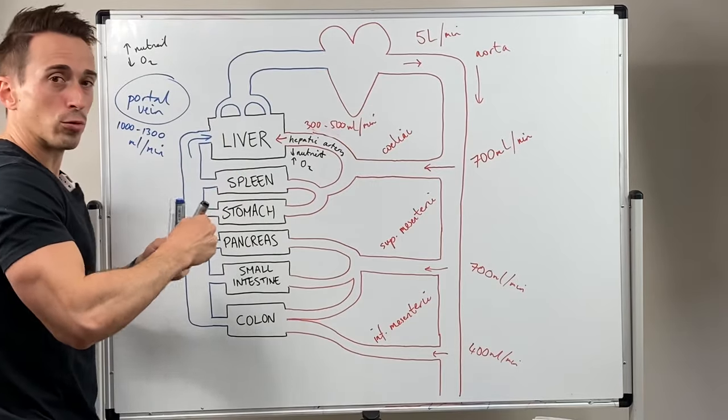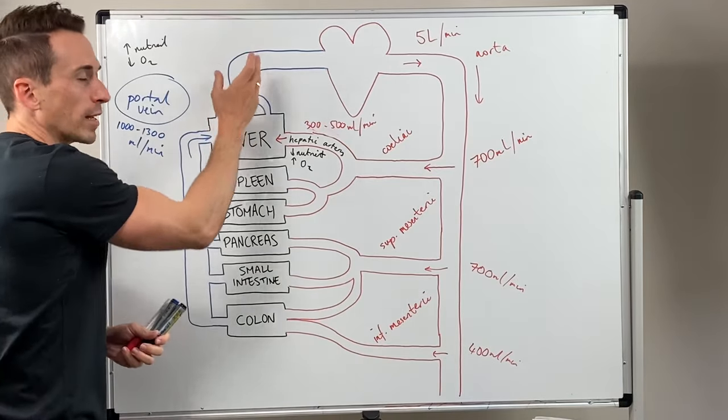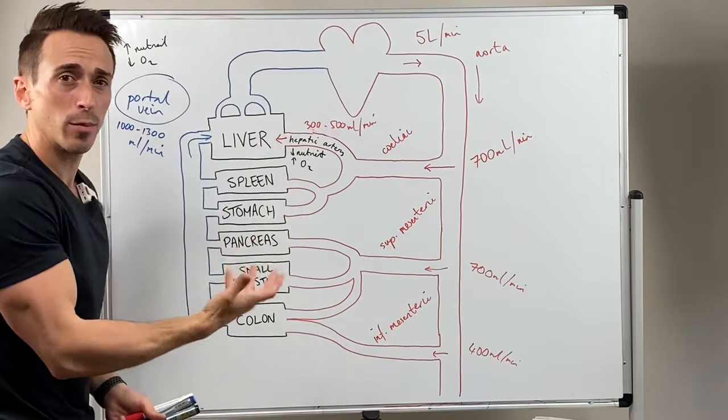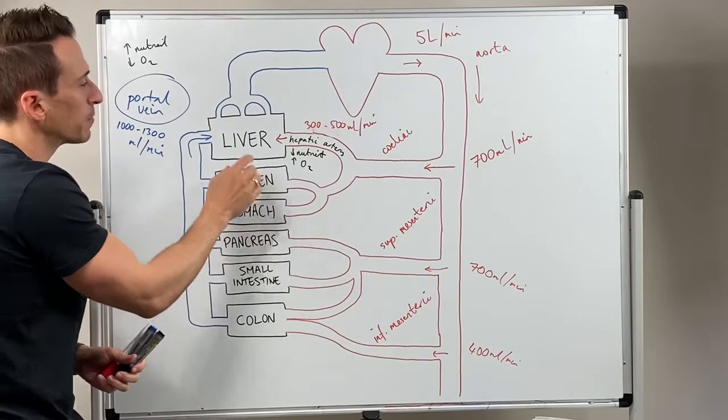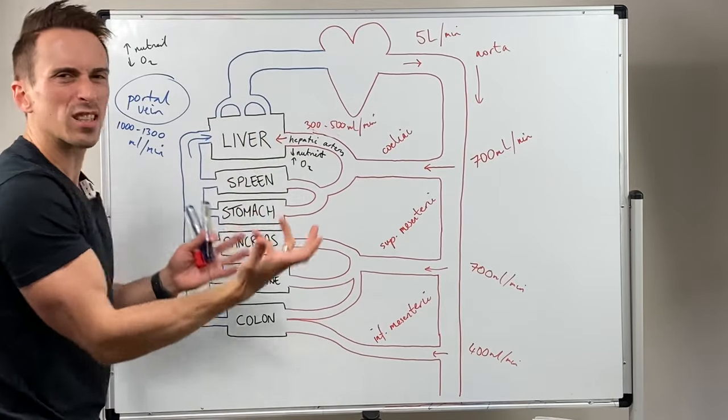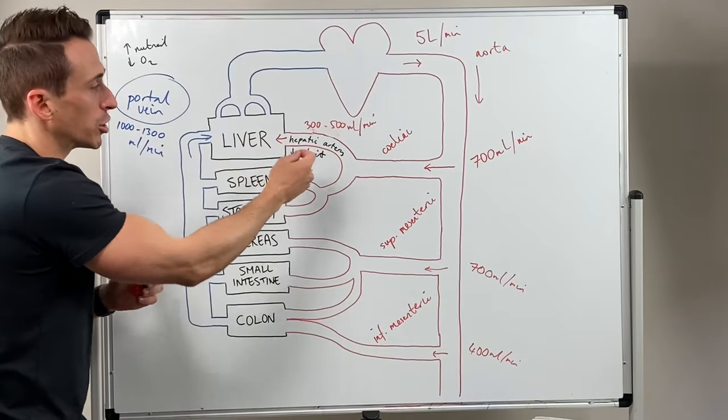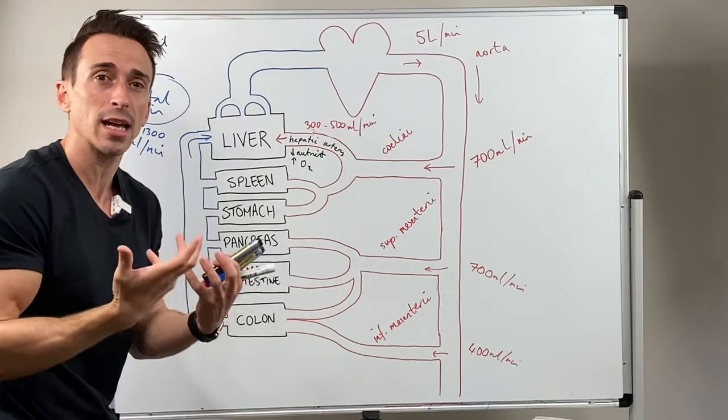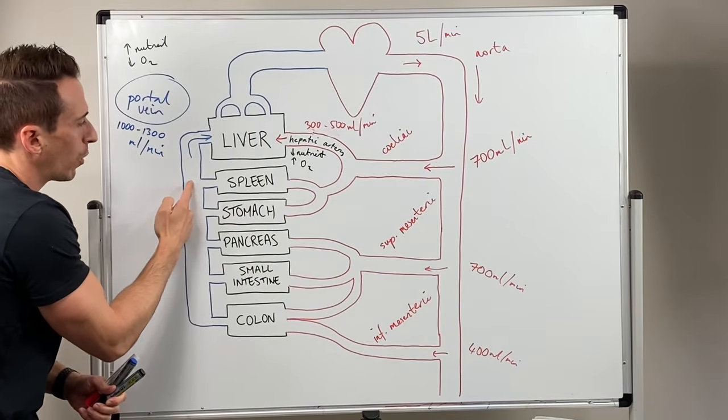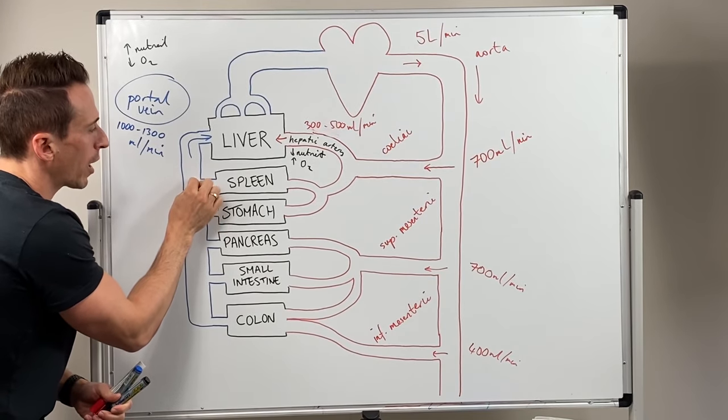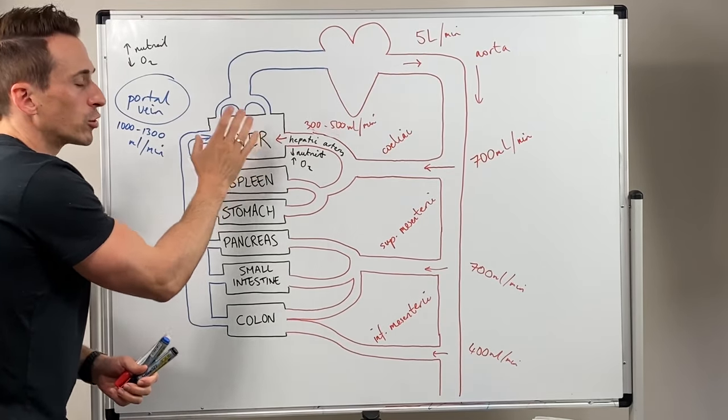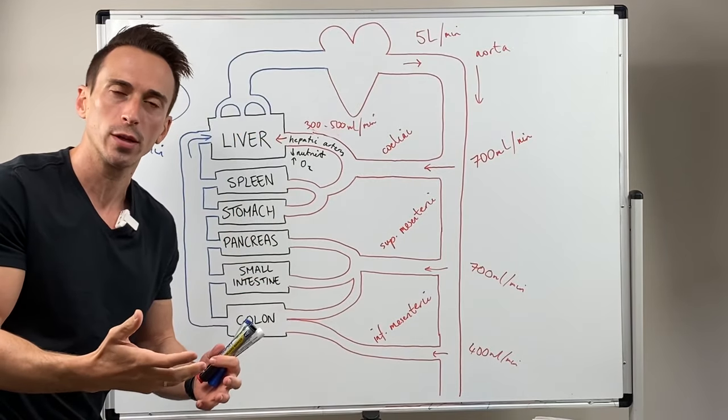Now the thing is the liver needs to drain, but what is it draining? It's obviously draining into a vein or multiple hepatic veins. But what does the liver do with all this stuff coming in? Obviously it uses the oxygen and the nutrients in order for it to sustain its own existence. But what happens with all this stuff that gets drained from these gastrointestinal organs is they go into certain structures in the liver called sinusoids.